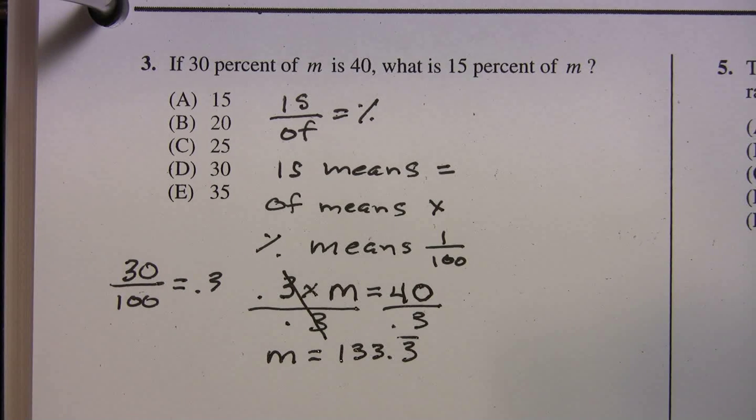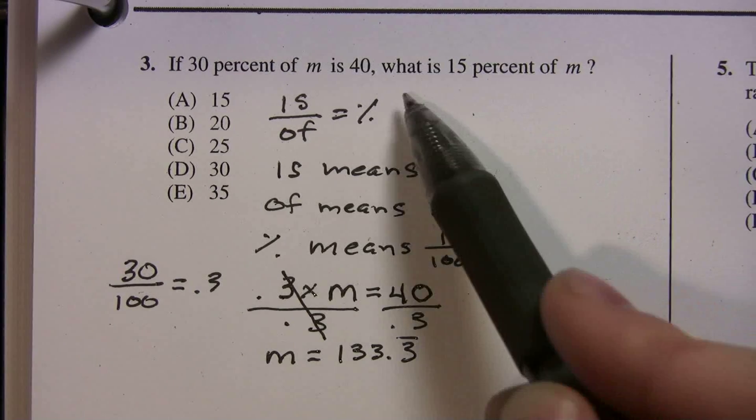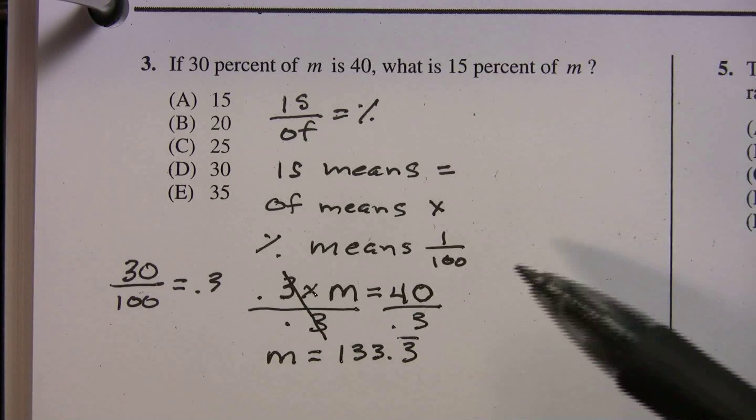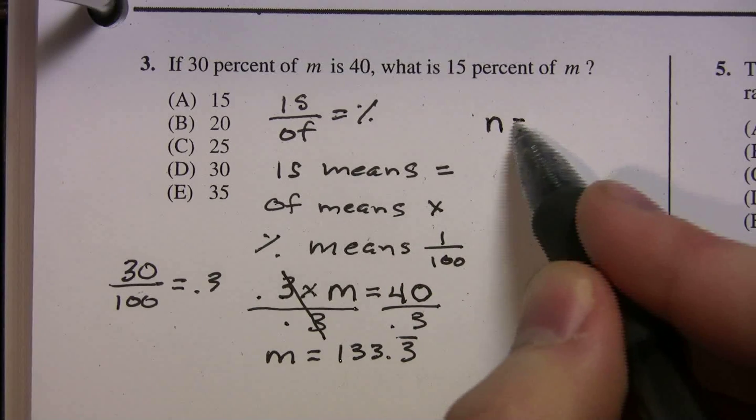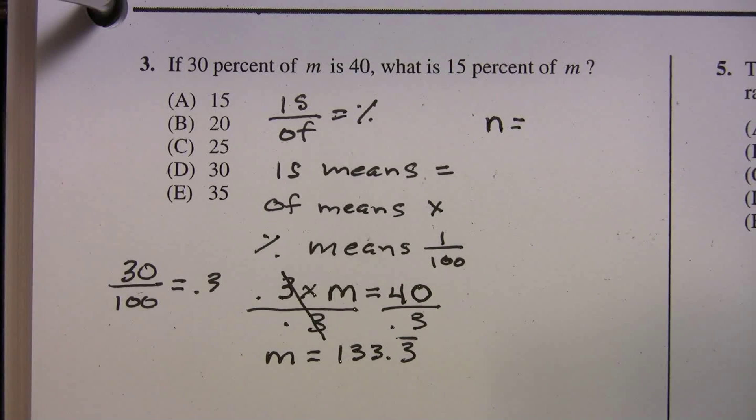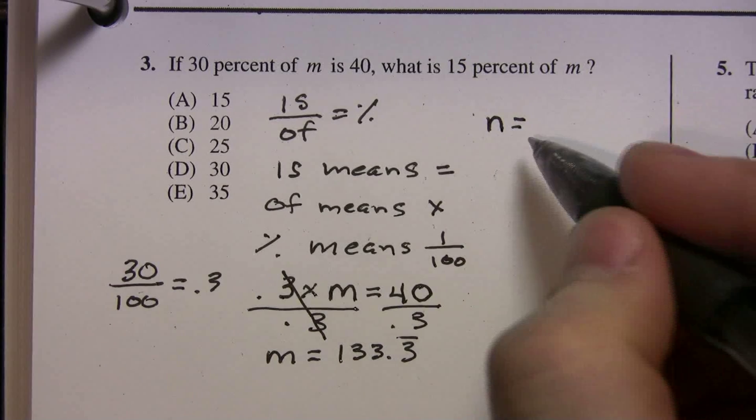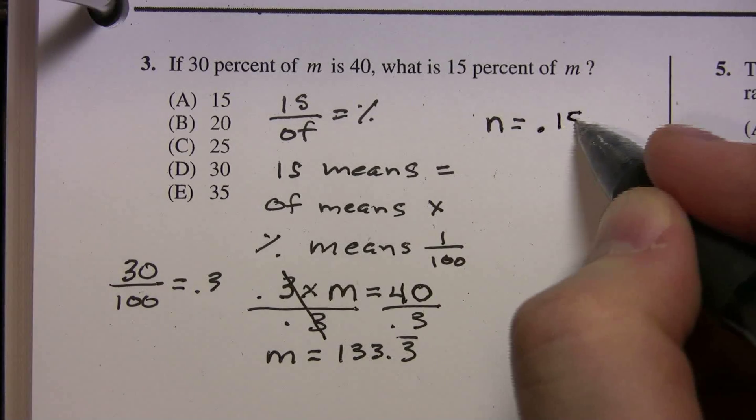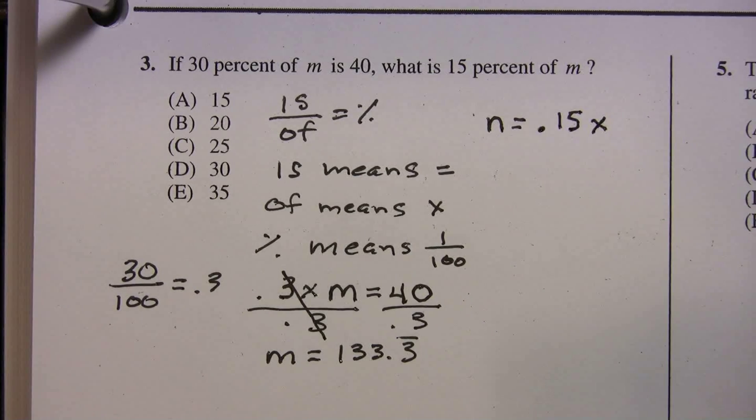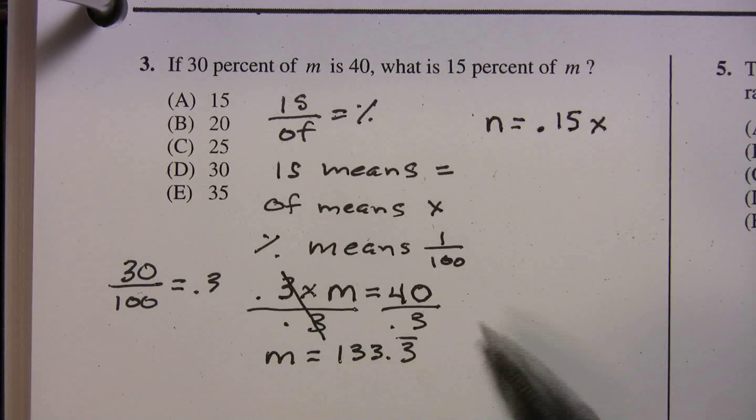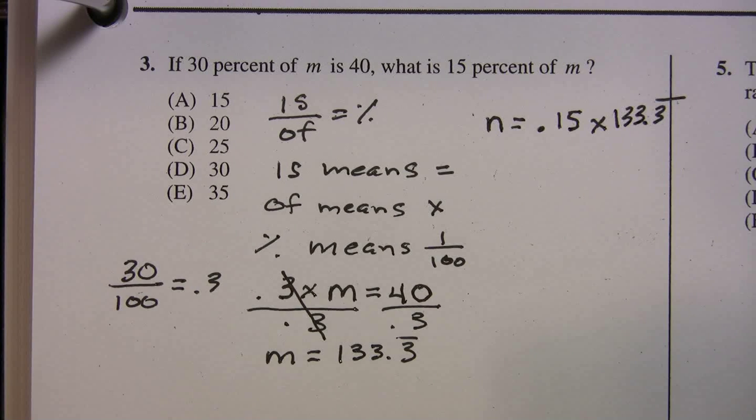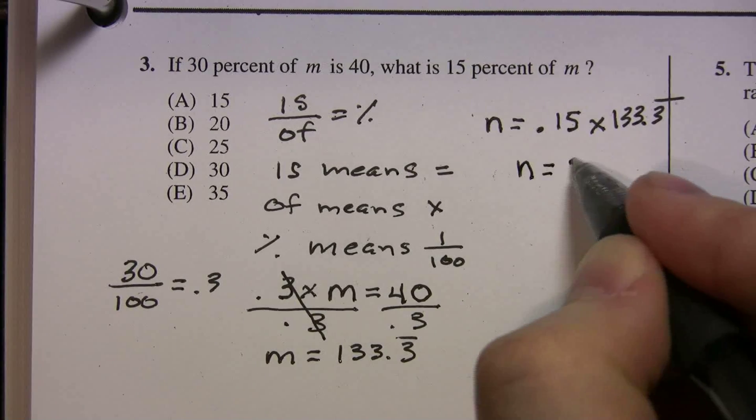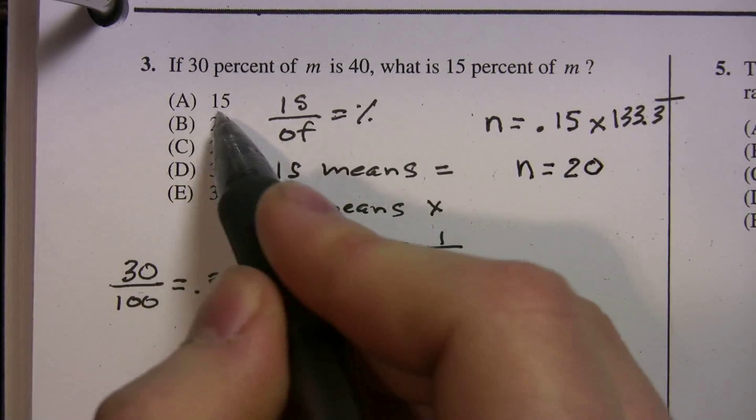So now let's do the second part. It says, what is 15% of M? Anytime you see what, that's your variable. So I'm just going to say, we'll make it a variable, we'll make it N. N is 15%. Well, 15% is going to be 15 over 100, or .15 of M. And what did we say M was? We said M was 133.3 repeating. Now if you have your calculator, we're just going to multiply times .15, and you get N equals 20, choice B.